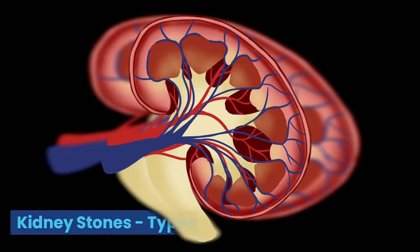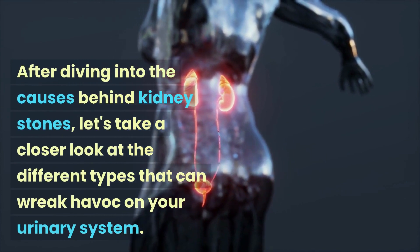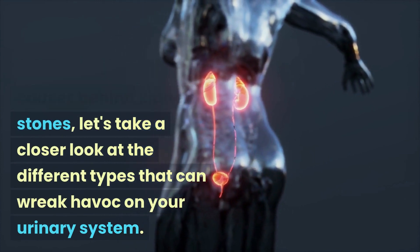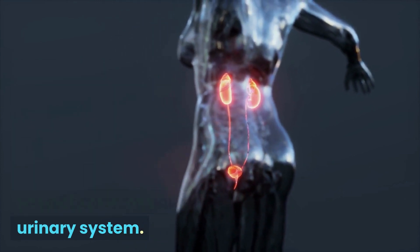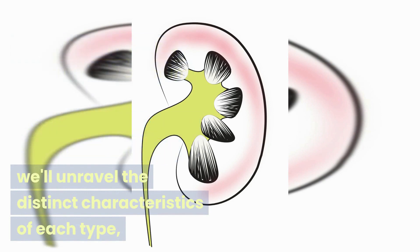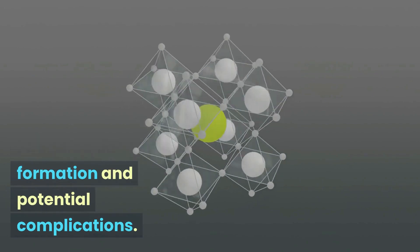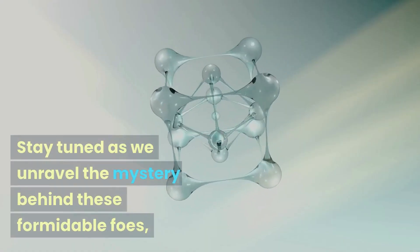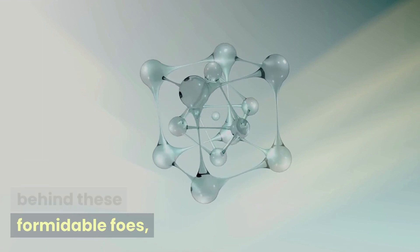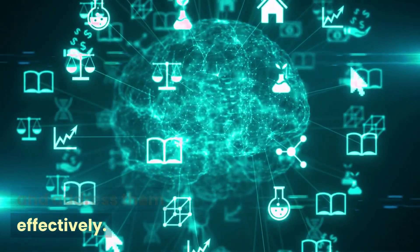Kidney Stones: Types. After diving into the causes behind kidney stones, let's take a closer look at the different types that can wreak havoc on your urinary system. From the commonly encountered calcium stones to the lesser-known uric acid and struvite stones, we'll unravel the distinct characteristics of each type, shedding light on their formation and potential complications.